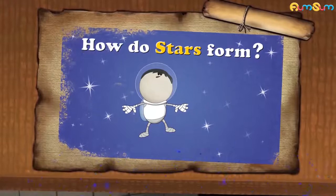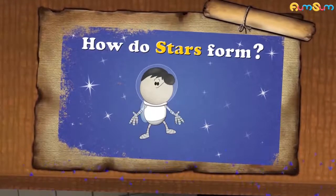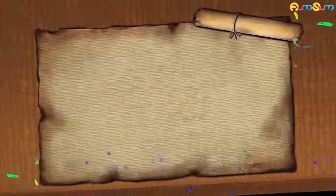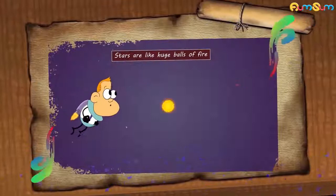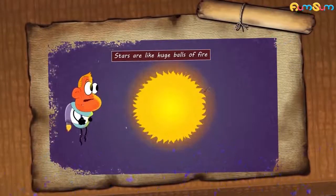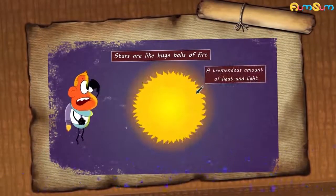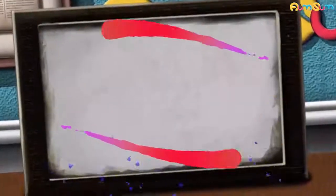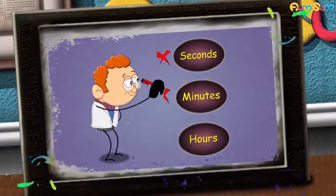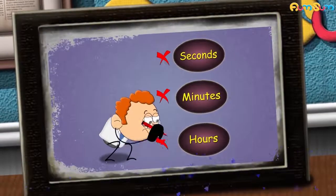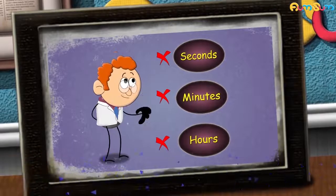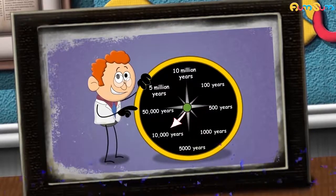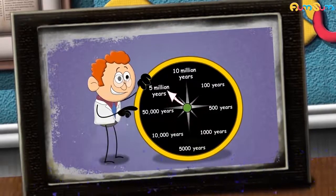How do stars form? Stars are like huge balls of fire that emit a tremendous amount of heat and light. Stars don't form in a few seconds, minutes, or hours. The star formation process is so slow that it can take millions of years.